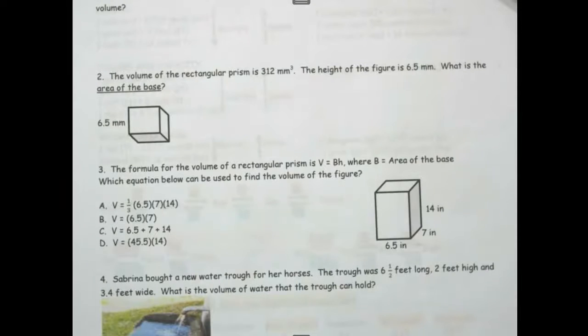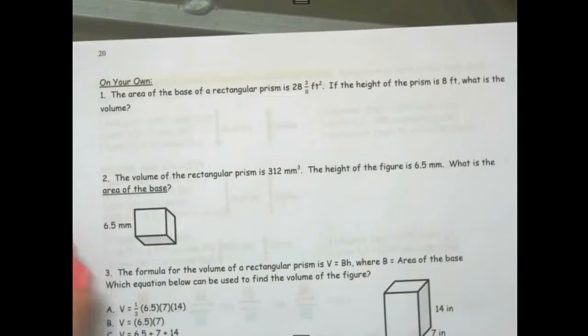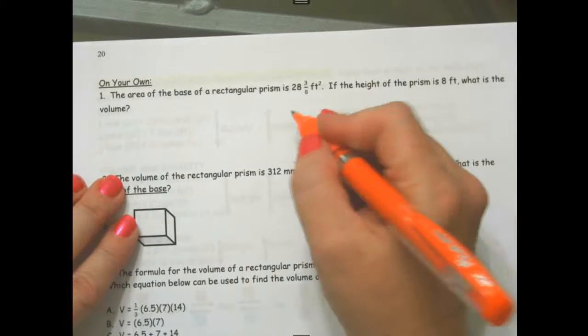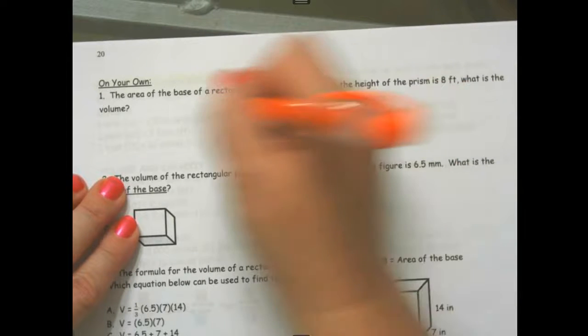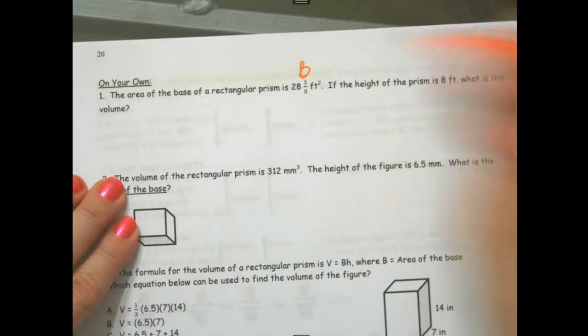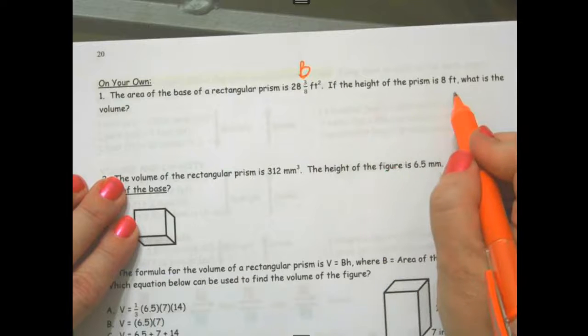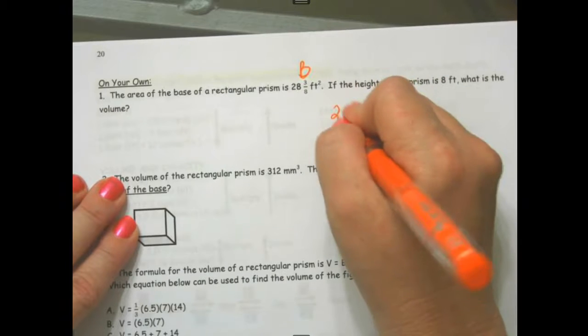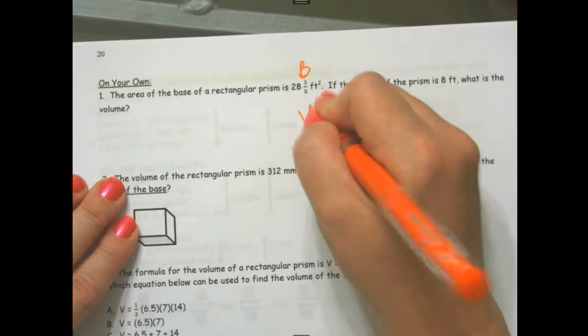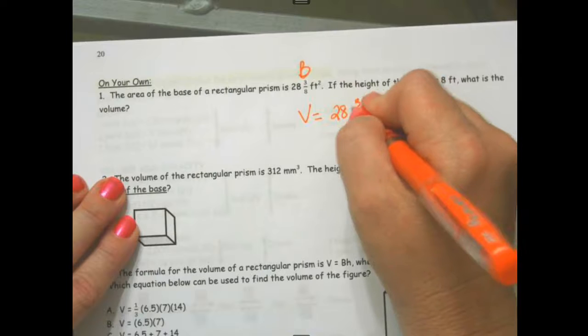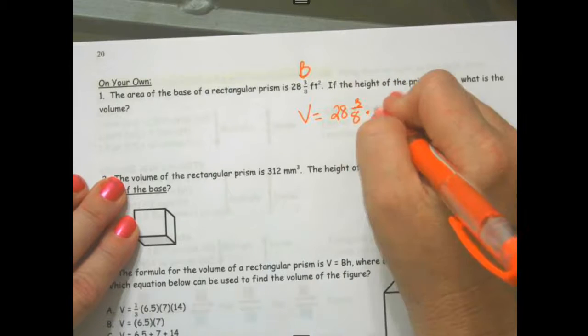Now this one is on your own. The area of the base of the rectangular prism, so this is your big B. The height is 8, so volume equals 28 and 3 eighths times 8.